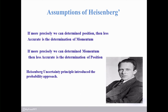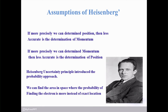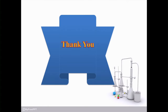In this section we dealt with the drawbacks of classical mechanics, de Broglie hypothesis, and the Heisenberg uncertainty principle. In Heisenberg's approach, we find the area in space where the probability of finding the electron is greater, instead of exact locations. Thank you very much. My previous videos are available via the i-buttons.